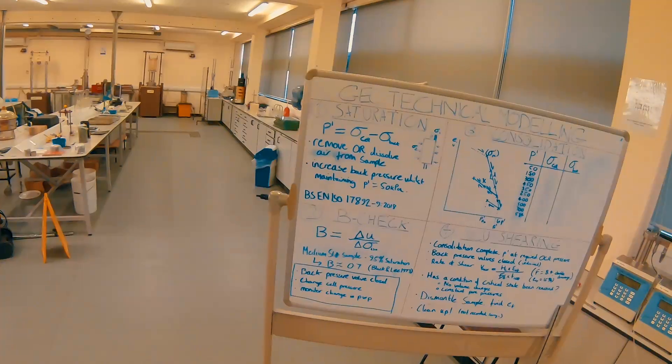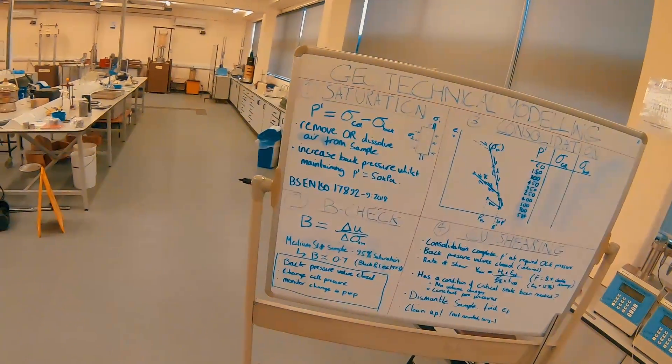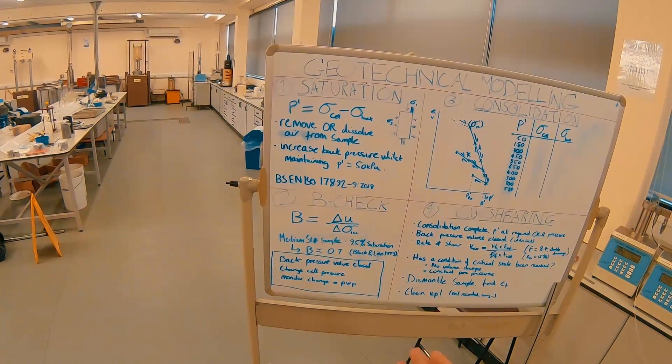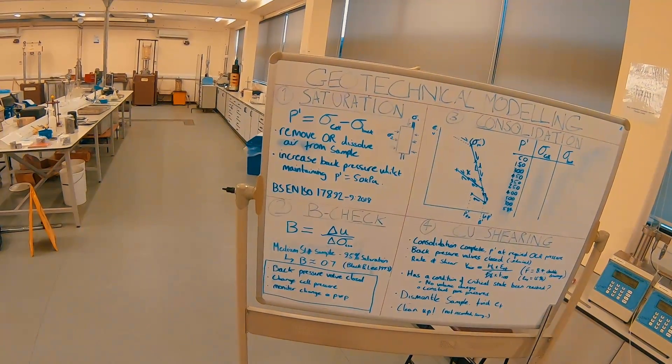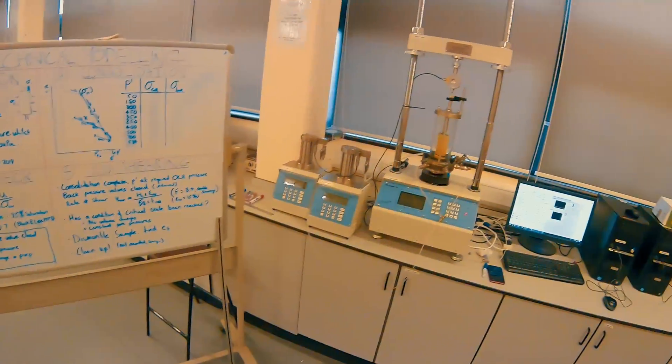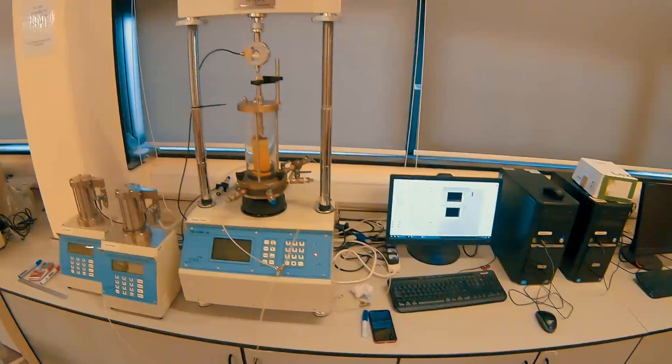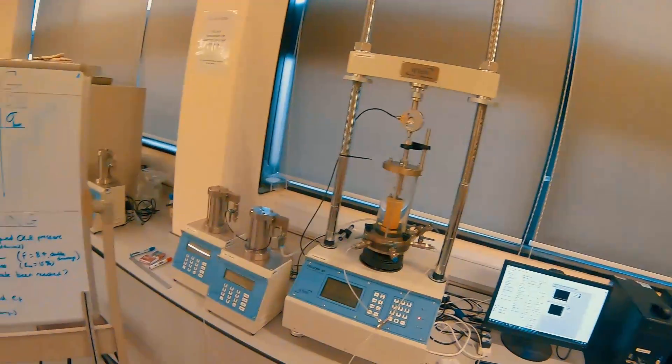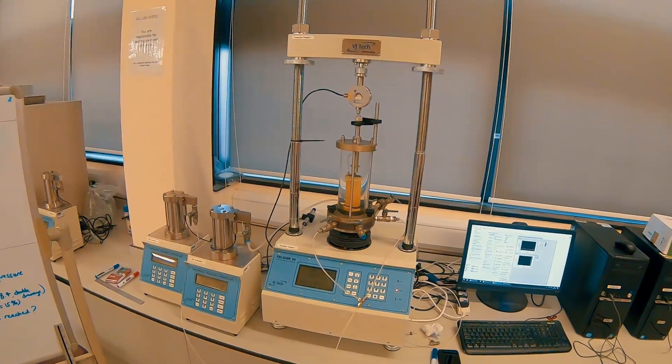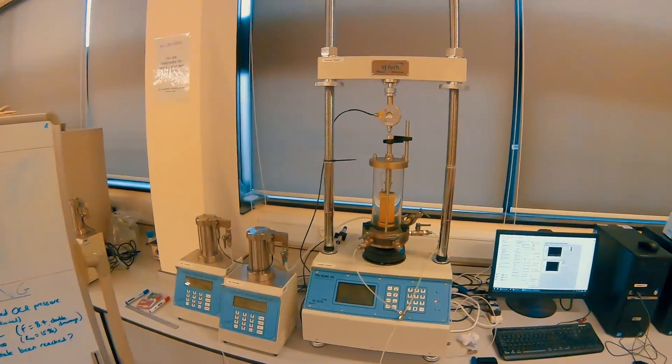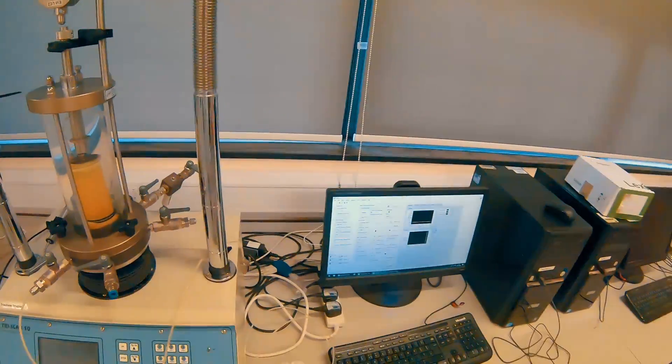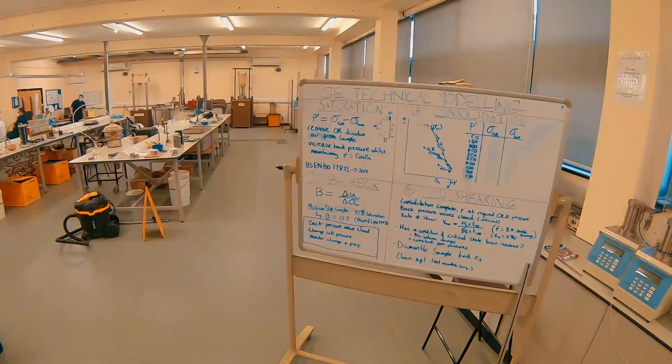If we take a look at our geotechnical modeling board, the fundamental formula for a B check is that the B value equals the change in pore pressure over the change in isotropic stress. We do that on the cell by closing off our back pressure valves and changing the cell pressure or isotropic pressure within the cell.